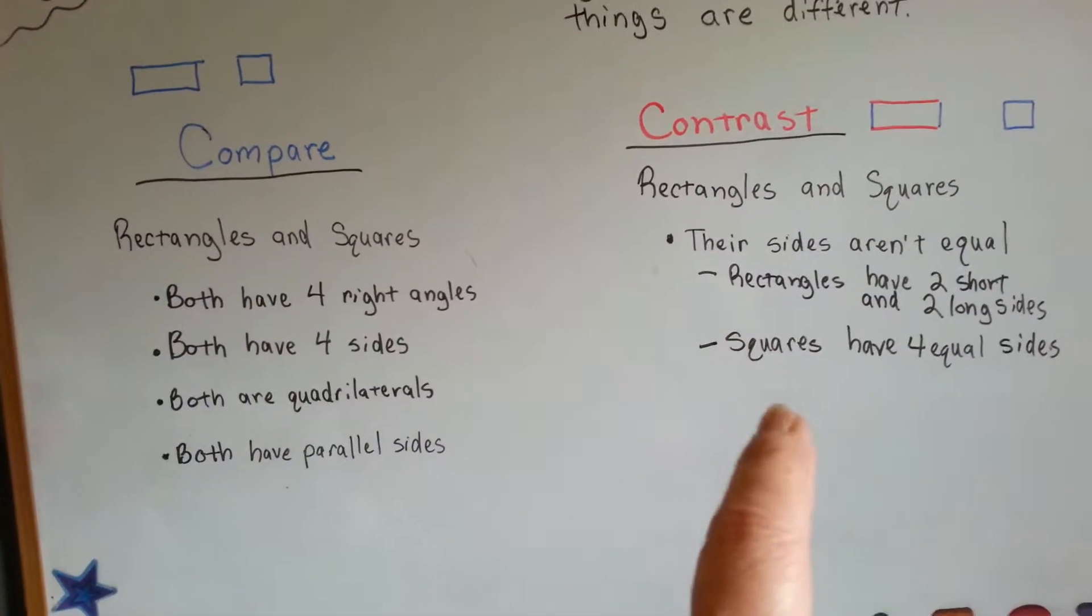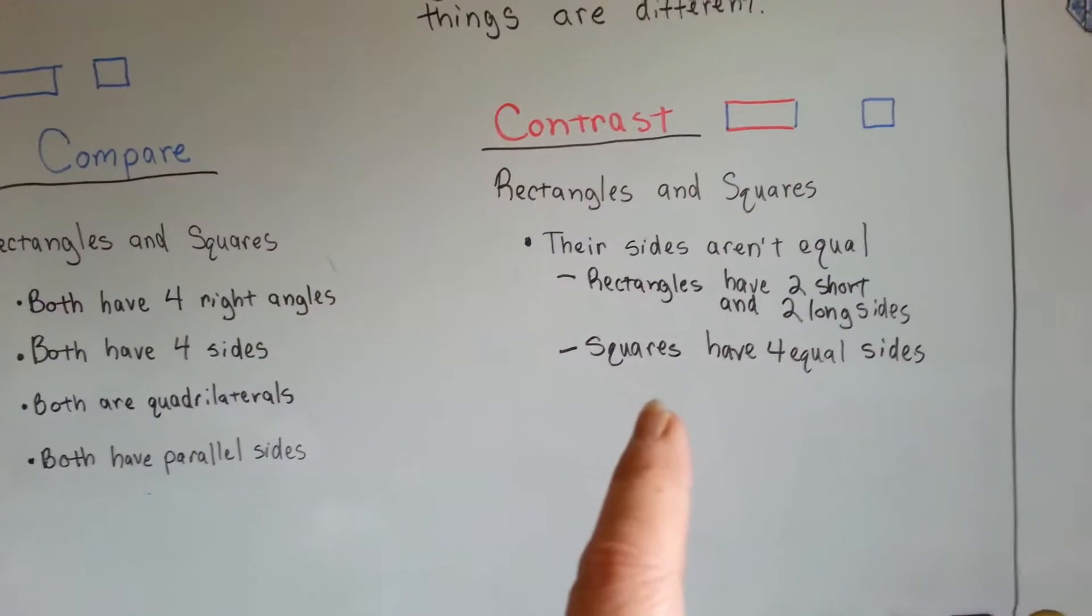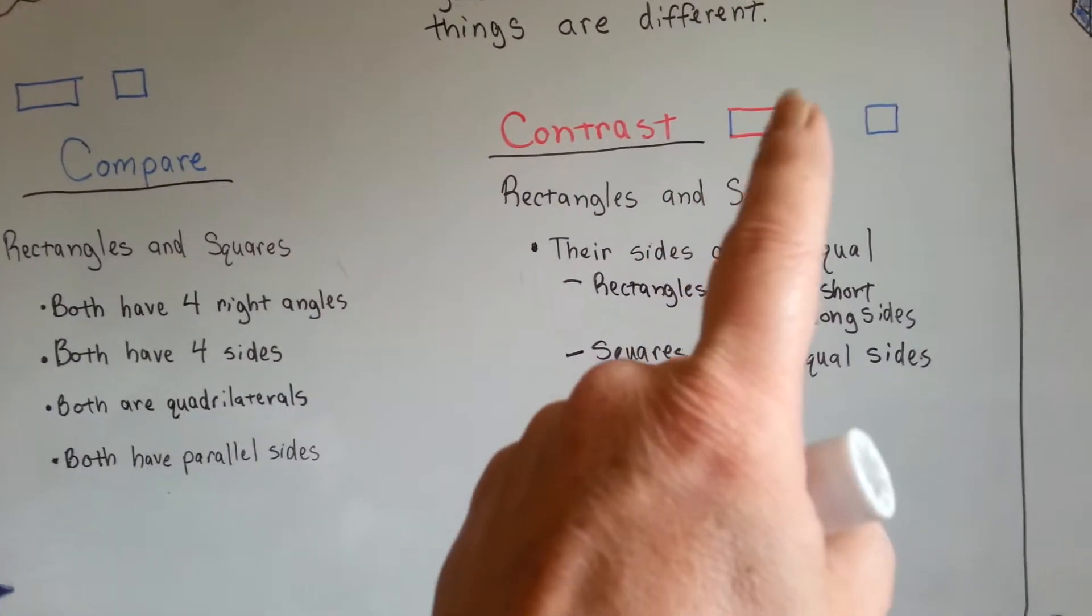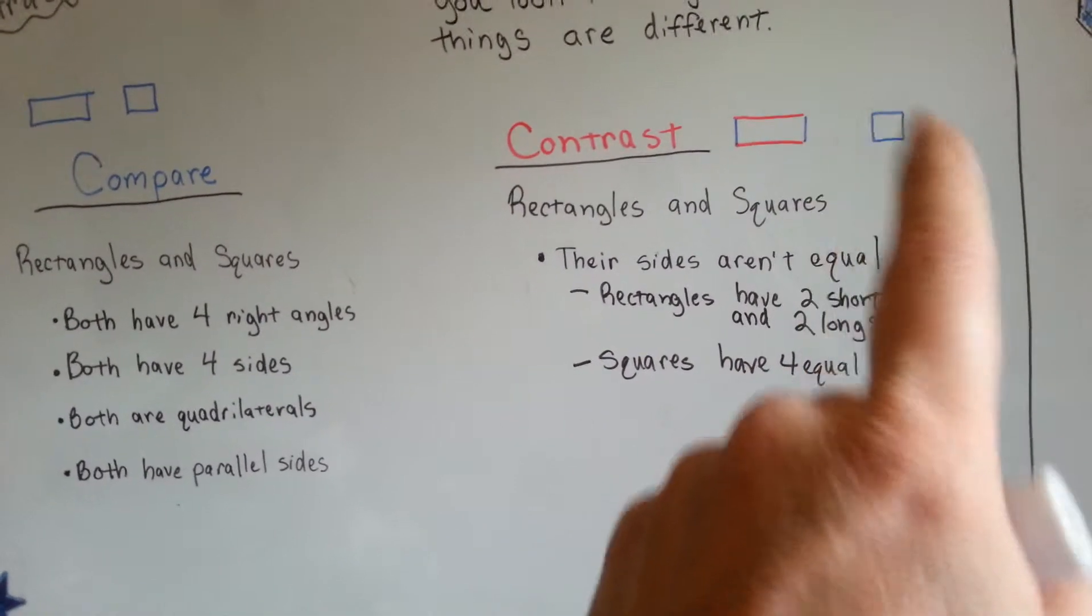On the contrast, rectangles and squares, their sides aren't equal. Rectangles have two short sides and two long sides, and squares have four equal sides.